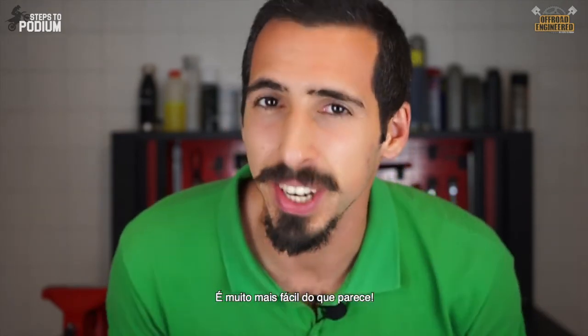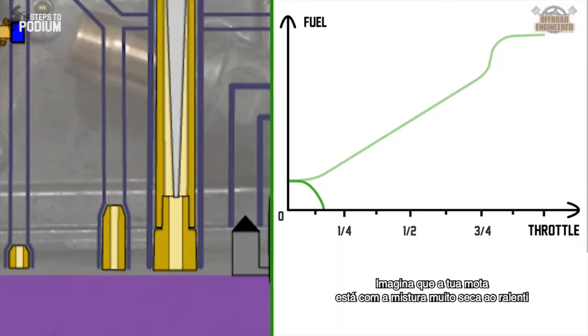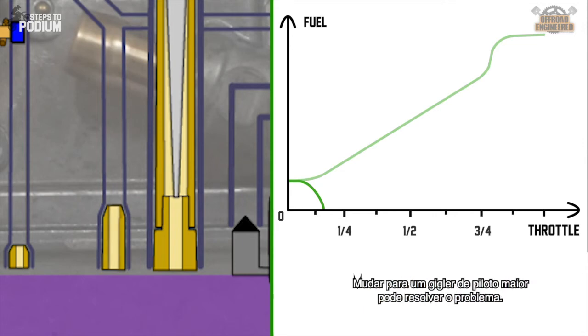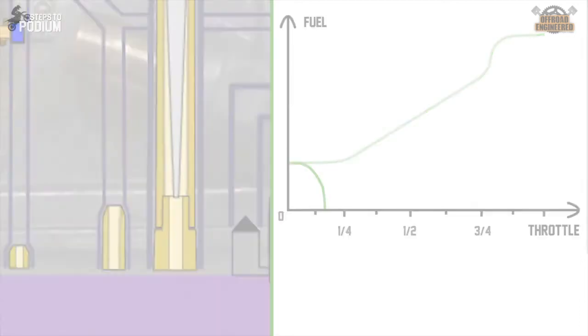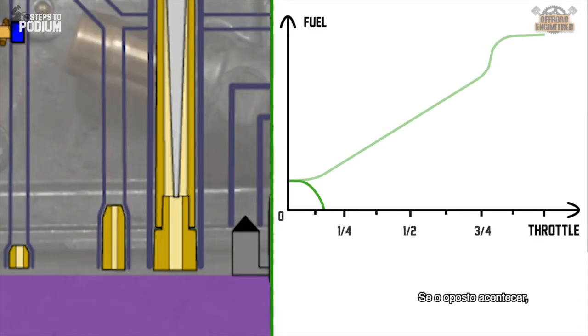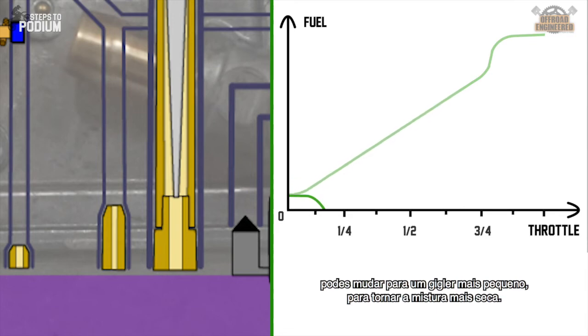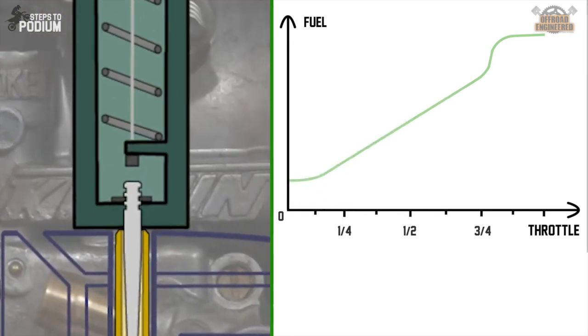Now comes the fun part of jetting your carb to your liking. It's a lot easier than you might think. Let's say your bike is running too lean on idle, or that it's stalling easily at little over idle, and you have set the air adjustment screw already too much in. Changing to a bigger idle jet will do the trick. If the opposite happens, you can change to a smaller idle jet, leaning the mixture out.